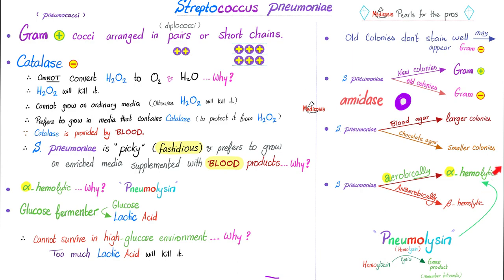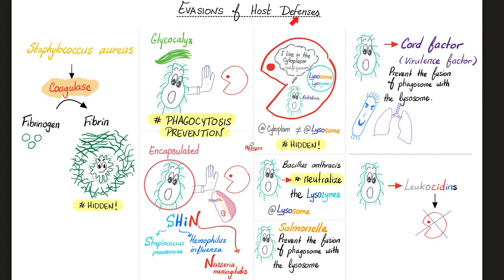If it gives alpha hemolysis — which is very typical — that's thanks to pneumolysin. Do you remember the mechanisms of evasion of host defense? One of them is having a capsule. Streptococcus pneumoniae, Haemophilus influenzae, and Neisseria meningitidis all have capsules. Streptococcus pneumoniae has a wonderful polysaccharide capsule that protects it from your macrophages, especially those in the spleen — hashtag splenic macrophages.